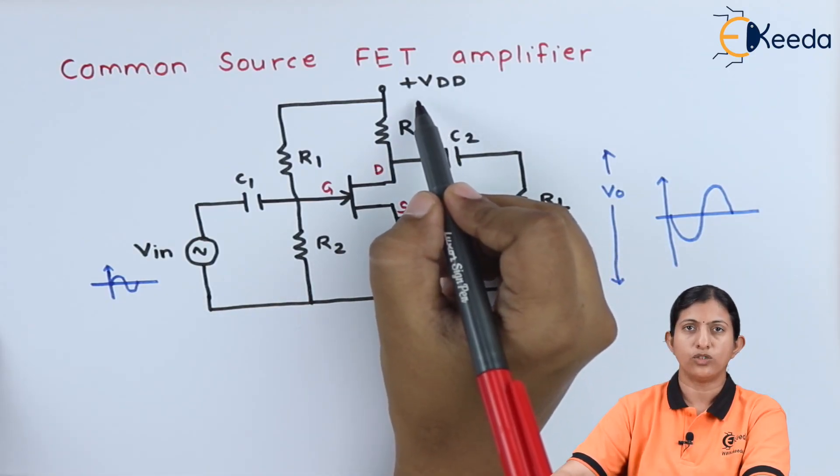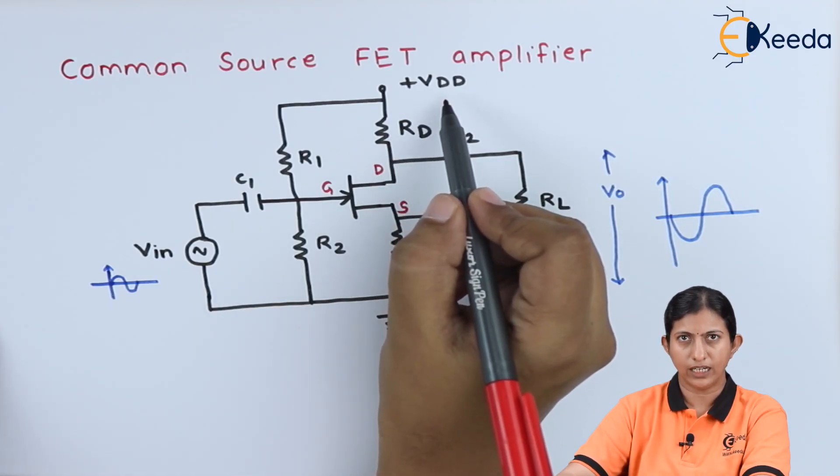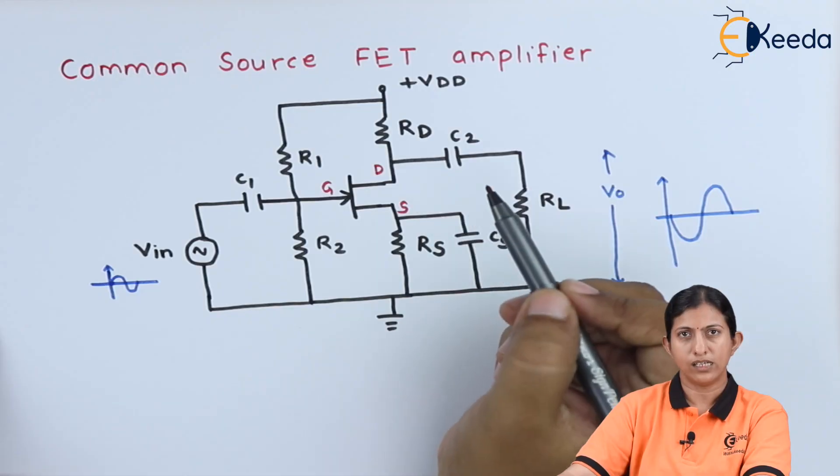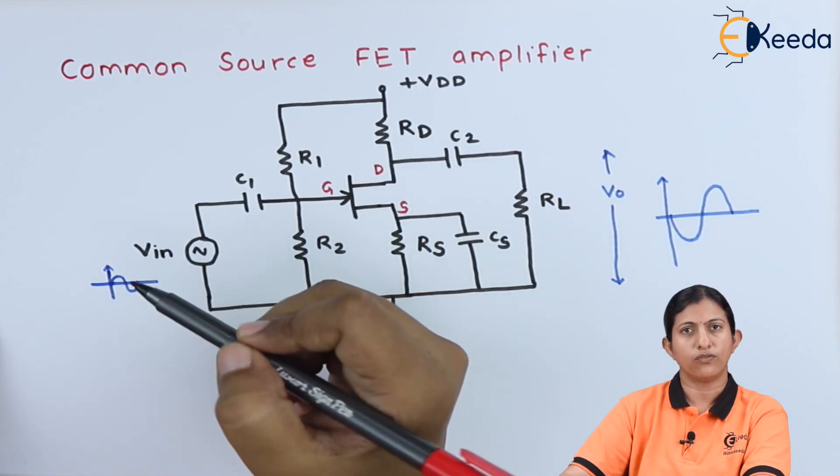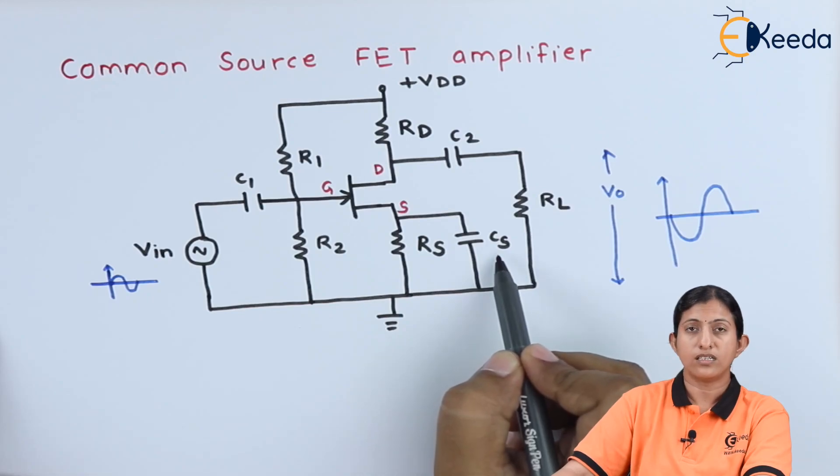We are applying DC voltage VDD, so the transistor will take supply from the power supply VDD and will amplify the signal according to the nature of the input waveform. We are using a capacitor which is known as the bypass capacitor.